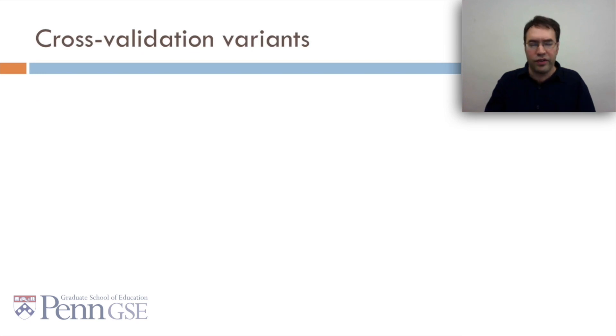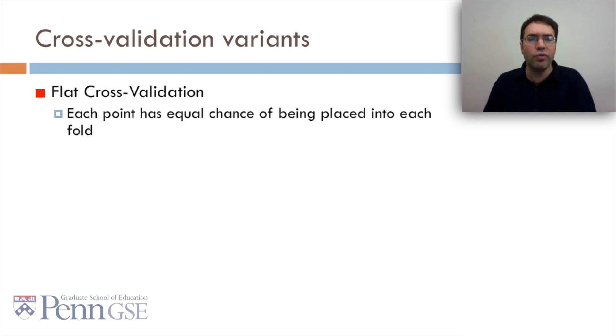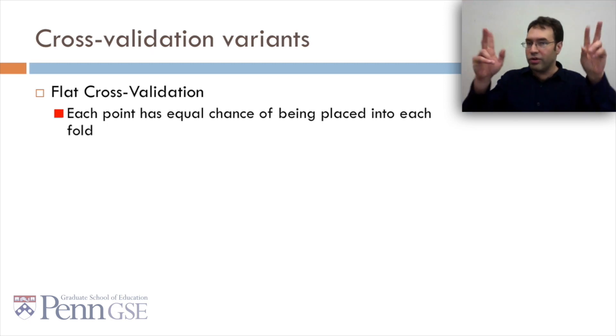So there's a bunch of cross-validation variants. First one is flat cross-validation. In flat cross-validation, each point has equal chance of being placed into each fold. You'll also just see flat cross-validation called cross-validation.